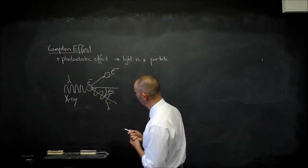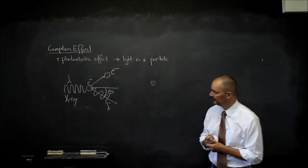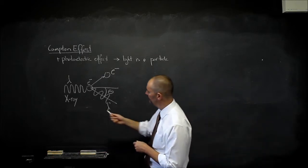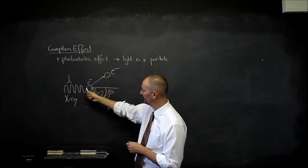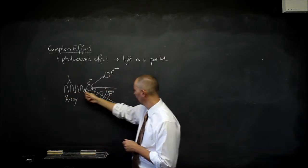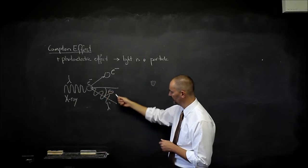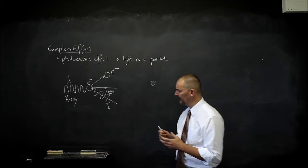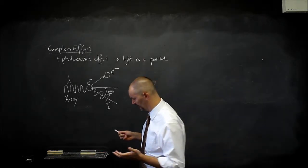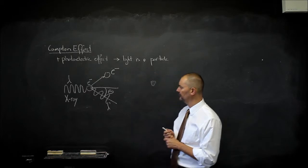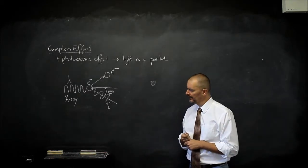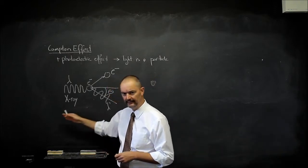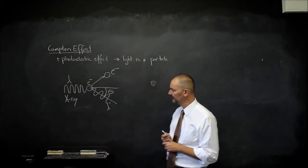The X-ray wave also reflected. If you drew a line — an incident line of this X-ray — and then the new direction of it, that made an angle we'll call theta. That reminds us of the collision of two objects. And as much as we had conservation of energy — so energy initial must equal energy final — but also momentum.